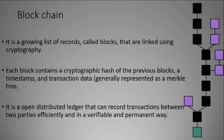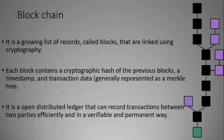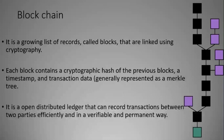Each block contains a cryptographic hash of the previous block. Whenever data is stored and new blocks are made, every block has a cryptographic hash of the blocks made earlier during previous transactions. This is called a blockchain. Unlike distributed ledger technology — which has a central body — in blockchain there is no central body. Users are the only authority; they control the system as it is a decentralized control system.